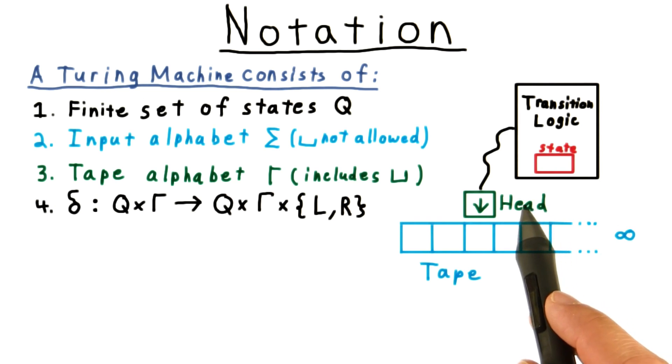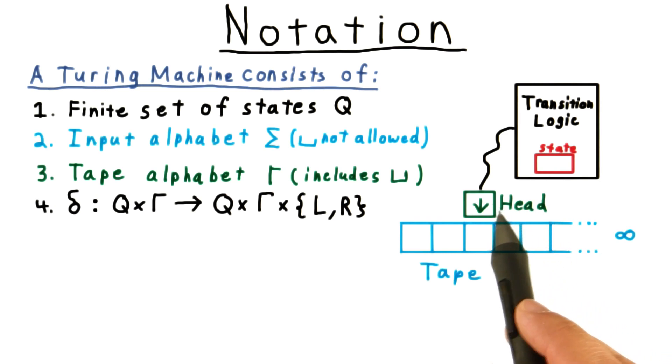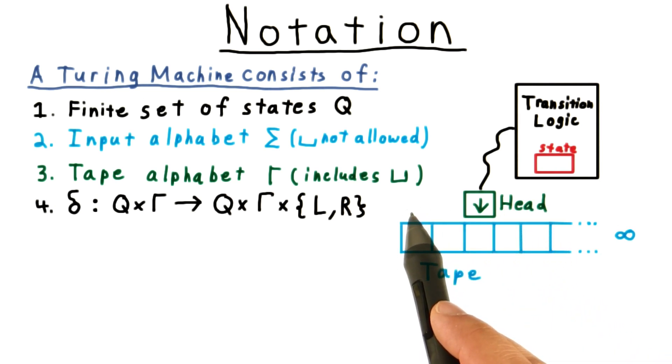Note that we can always move the head to the right. But if the head is currently over the first position of the tape, then we can't actually move left. When the transition function says that the machine should move the head left, then we just have it stay in the same position by convention.